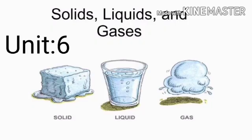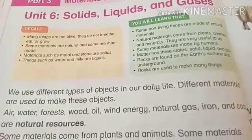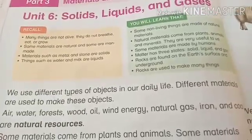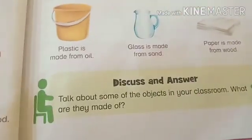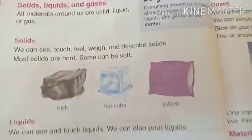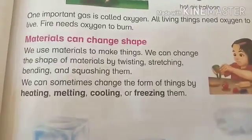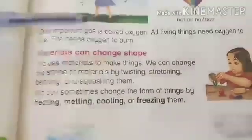Hi everyone. In unit number six we learned about solids, liquids, and gases, and what are natural resources and what are man-made resources, what are natural materials and what are man-made materials. In our last class we studied about the properties of solids, liquids, and gases. Today our topic is: materials can change shape.